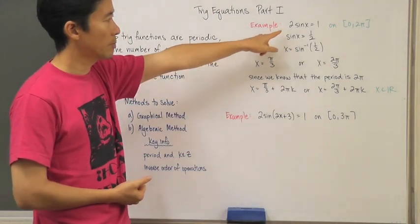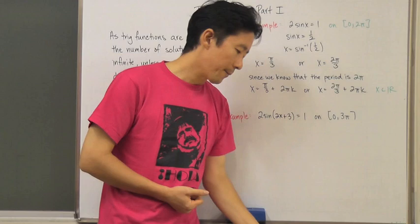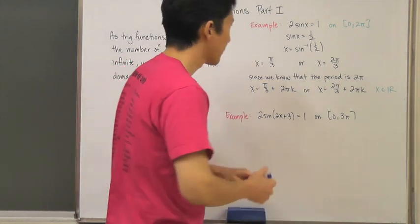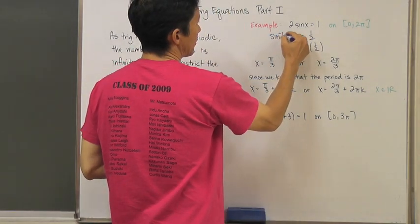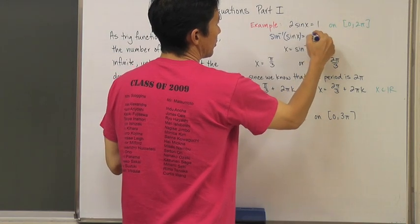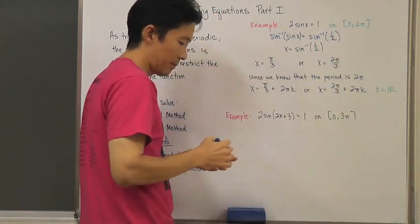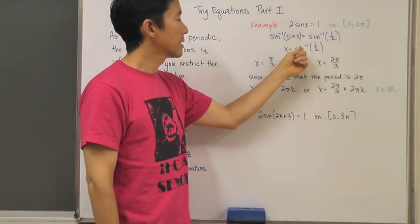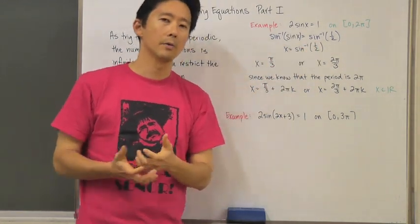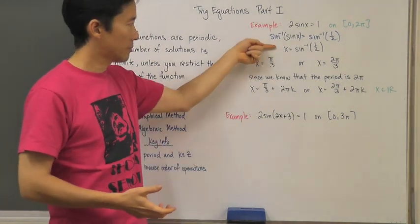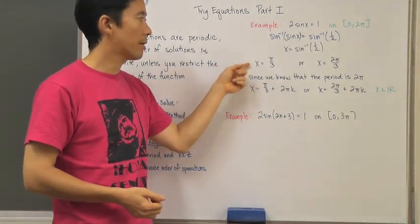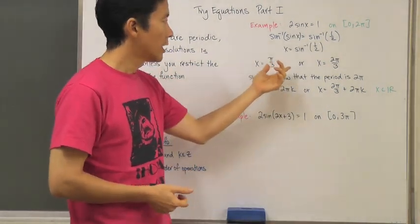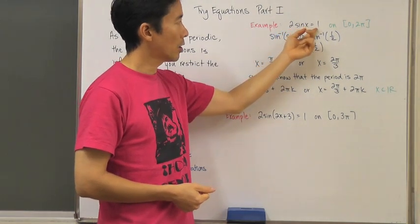Let's say the original problem is two sine x equals one on zero to two pi. If we solve for sine x, we get sine x equals one half. Taking the inverse sine of both sides gives us x equals inverse sine of one half. The two solutions are pi over three and two pi over three. Those are the only two values of x on the restricted domain from zero to two pi.